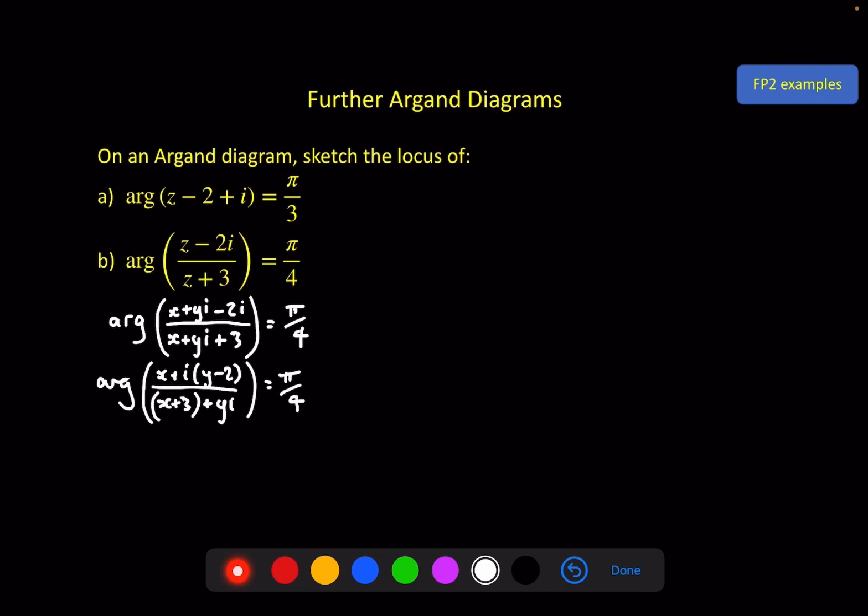Now this is the extra bit compared with the previous example. We can't do the inverse tan of the imaginary part divided by the real part here, because we don't know what the imaginary part and the real part is of this full complex number. We're going to need to rearrange. So as an aside, let's deal with this.